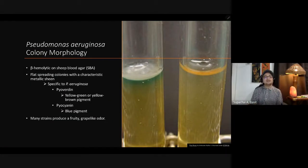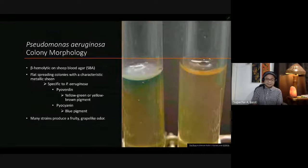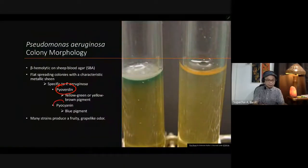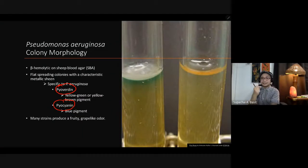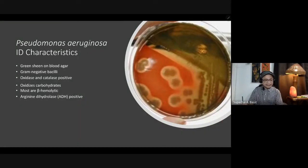In blood agar plate, Pseudomonas aeruginosa is beta-hemolytic, meaning it completely hemolyzes blood. It can produce green pigment due to pyoverdine, and blue pigment due to pyocyanin. Many strains produce a fruity grape-like odor due to the aromatic compound aminoacetophenone. They can also produce a greenish sheen on blood agar plate. They are gram-negative bacilli, oxidase and catalase positive, can oxidize carbohydrates, and are beta-hemolytic.